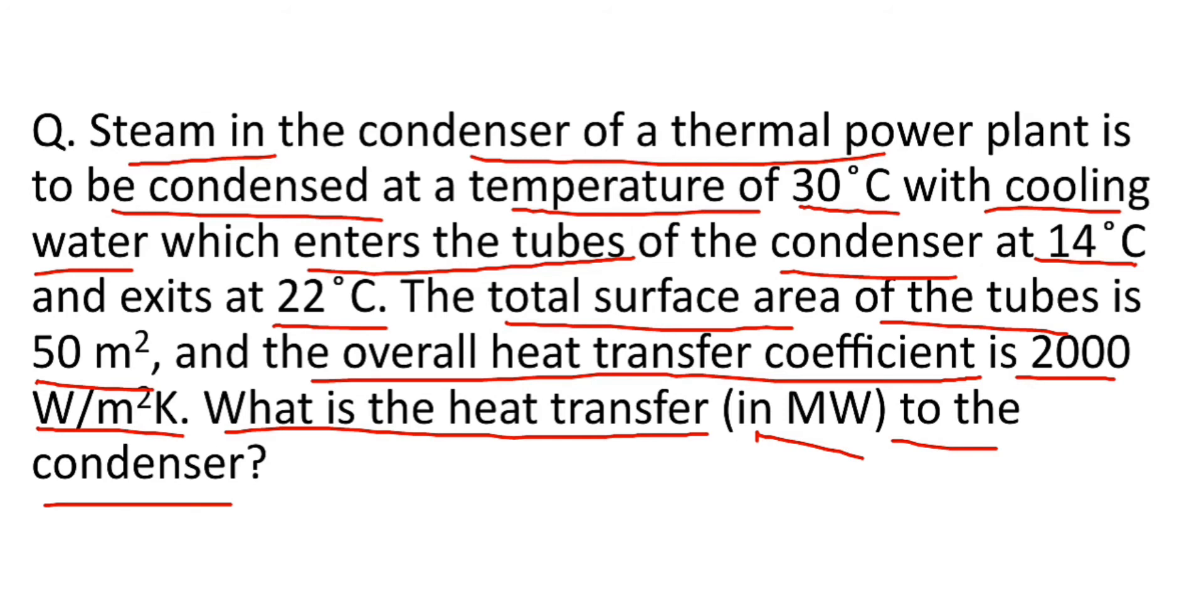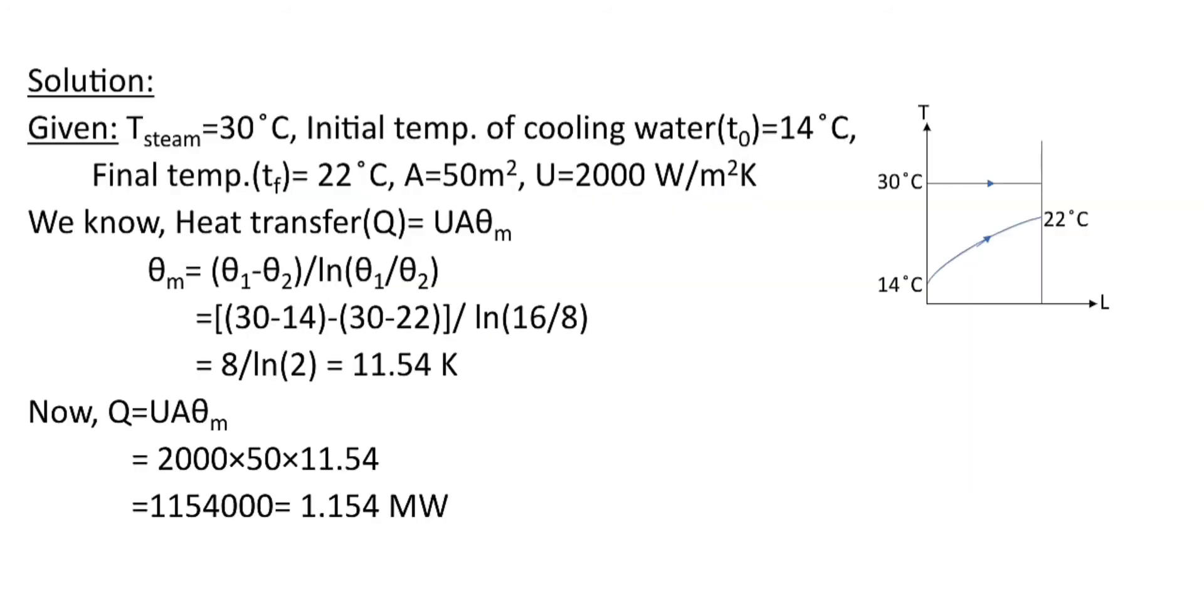Now let's go for the solution. Here temperature of steam is 30 degree Celsius. Initial temperature of cooling water that is Ti is 14 degree Celsius. Final temperature of cooling water that is Tf is 22 degree Celsius. Cross sectional area is given which is 50 meter square.